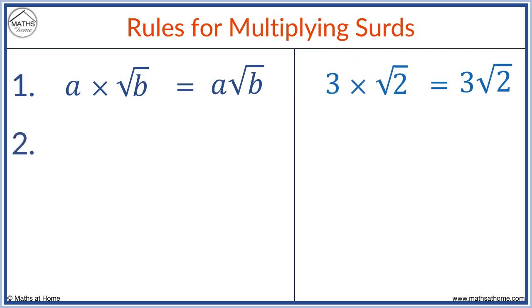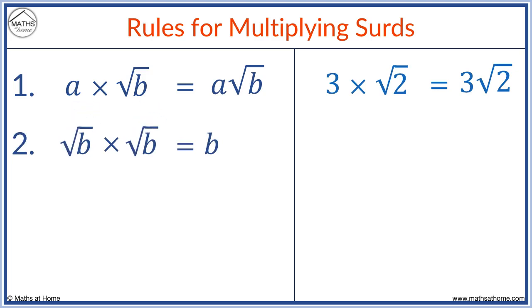Rule 2: root b times root b equals b. If the numbers under the square roots are the same, we just get the number itself. For example, root 3 times root 3 equals 3.